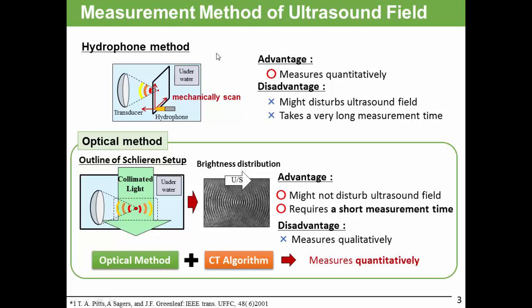In contrast, another alternative method that catches our attention is optical method. In optical method, we let the collimated light pass through the ultrasound field and acquire the image by camera. The acquired image gives you the brightness distribution. Optical method might not disturb ultrasound field and requires a short measurement time. However, the disadvantage of the optical method is to measure qualitatively. Based on the advantage and disadvantage, our motivation is to apply the optical method and combine it with CT algorithm to quantitatively measure the ultrasound field.